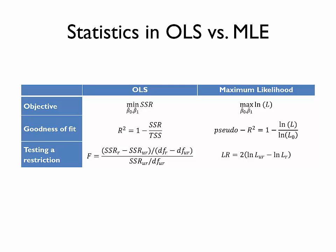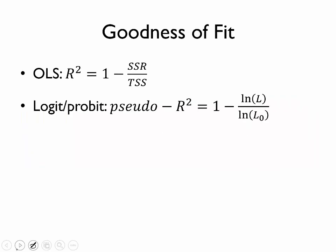For the rest of this video, we will focus on these measures of goodness of fit and how to test a restriction in a maximum likelihood model. To measure goodness of fit in a logit or probit model, we calculate what's called pseudo-R-squared, which equals 1 minus the log likelihood of our model divided by the log likelihood of what we call a constant-only model. This L0 is the likelihood of a constant-only model.